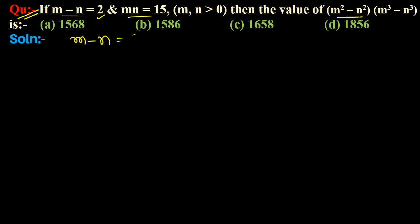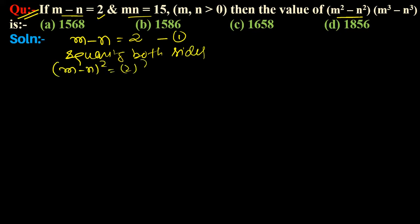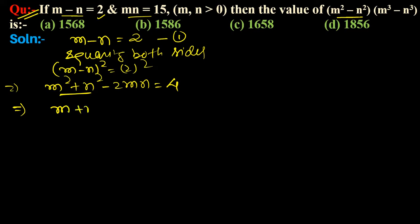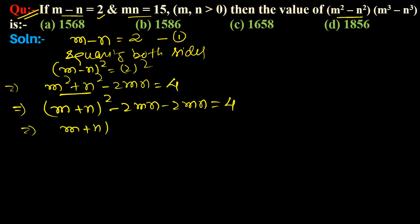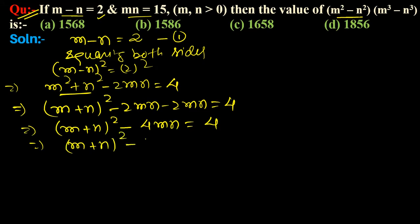m minus n is equal to 2, so squaring both sides: m minus n whole square equals 2 whole square, which is equal to m square plus n square minus 2mn equals 4. So m plus n whole square minus 2mn minus 2mn equals 4.